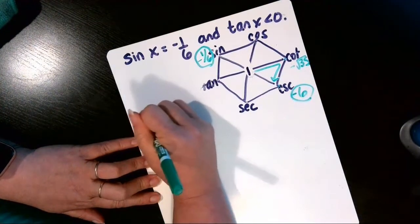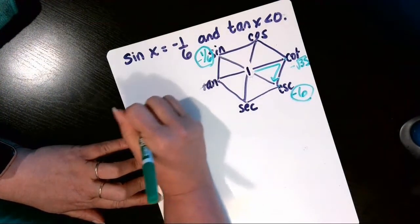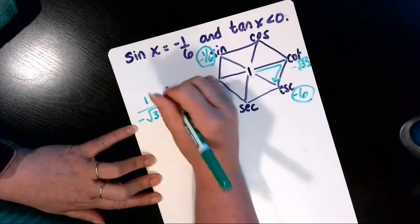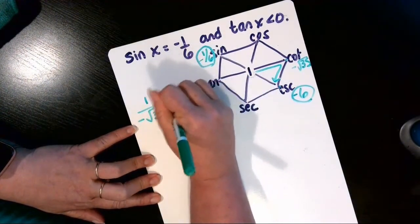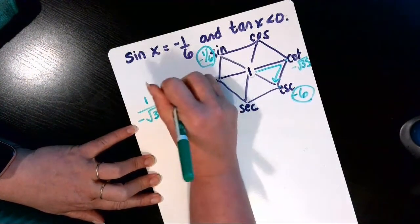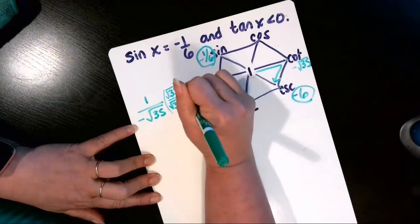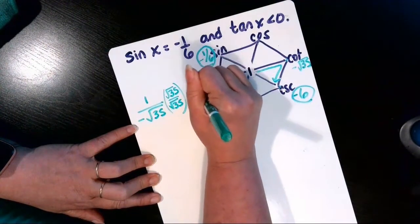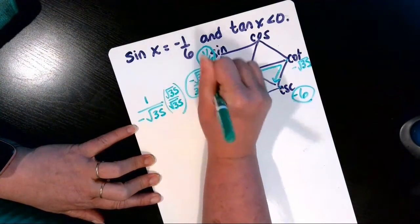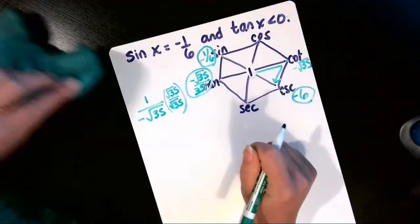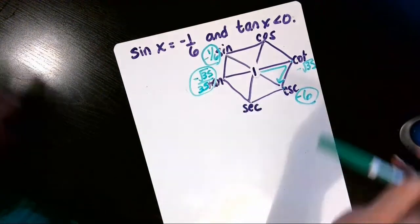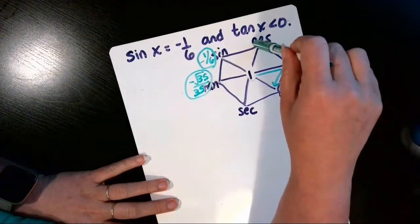So we're going to get negative square root of 35 and take its reciprocal, and then we'll need to rationalize that denominator by multiplying the top and the bottom by root 35 over root 35. That equals negative square root of 35 over 35 for the tangent.